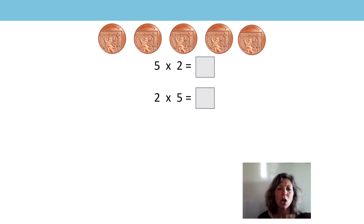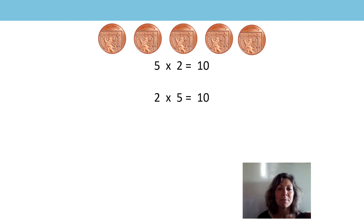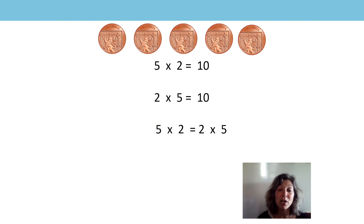That's right. What about here? Can you start by writing the equation out? What is my product? Pause the video. Did you say that five twos are ten? And two five times is ten? Fab. Can you fill out the missing space then? What is the expression that goes on this side of the equation? Did you say five twos is equal to two five times? That's fantastic. You can see that they have the same value because they have the same product.